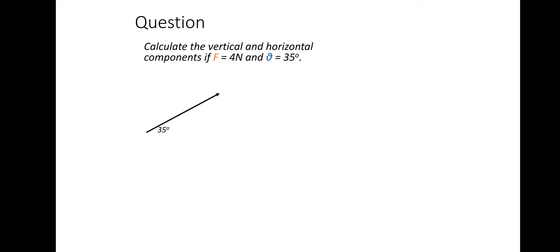Calculate the vertical and horizontal components if F equals 4 newtons and the angle is 35 degrees. What you actually do is make a triangle — I'm just using dashed lines to show that they are component vectors. This would be the vertical force Fv, and this would be the horizontal force. To do that, you can just use trigonometry. If you wish to have a go, just pause the video and then continue.